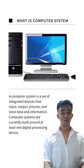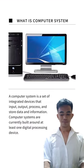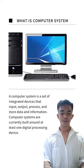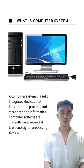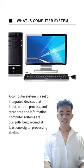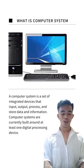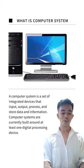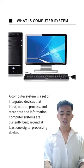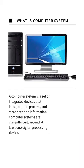What is a computer system? A computer system is a set of integrated devices that input, output, process and store data and information. Computer systems are currently built around at least one digital processing device.